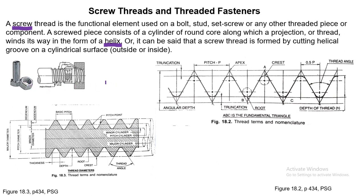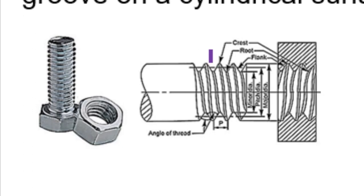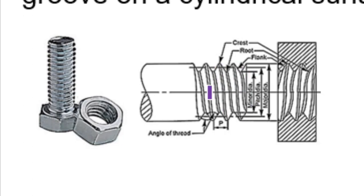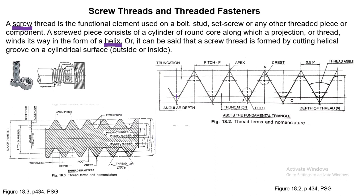We can learn various nomenclature of a thread. For example, this is a V-shaped thread — in cross-section it looks like a V. The top part is called the crest, and the bottom part of the V is called the root for the bolt. For the nut part, the crest is on the top side and the root is at the bottom. In a clearer picture, this is the crest and this is the root.